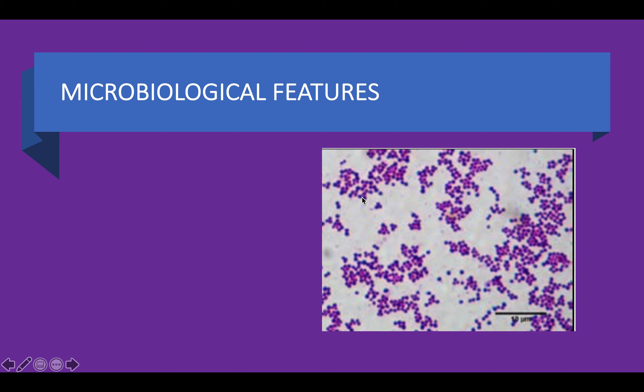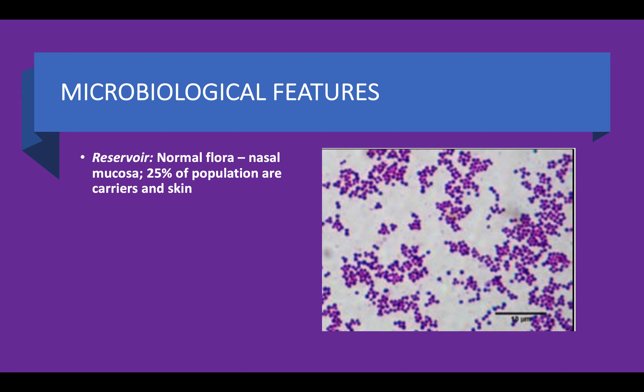Normal reservoirs include the nasal mucosa, and 25% of the population are carriers. They can also be found on the skin. So it's normal to find Staphylococcus aureus in the normal flora, including nasal mucosa as well as skin.